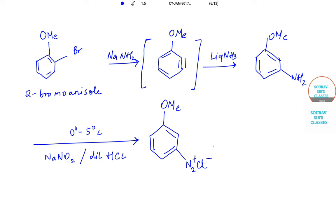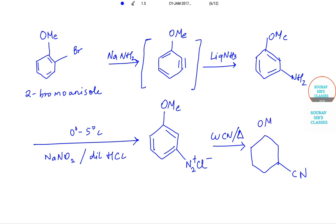Then CuCN is added (Sandmeyer reaction) and it gets transformed to give a CN group with OMe — and this is nothing but 3-CN-OMe (3-cyanoanisole).